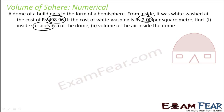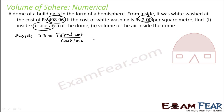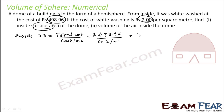Once we have the surface area, we can easily find the radius and then the volume. The total cost is ₹498.96 and the cost is ₹2 per square meter. So the inside surface area equals total cost divided by cost per square meter, which gives 249.48 square meters. That is the total inside surface area.